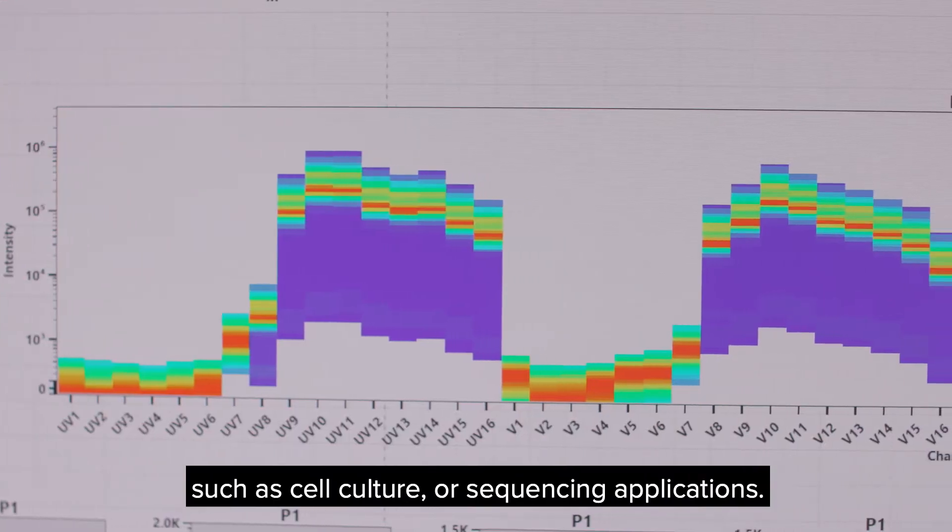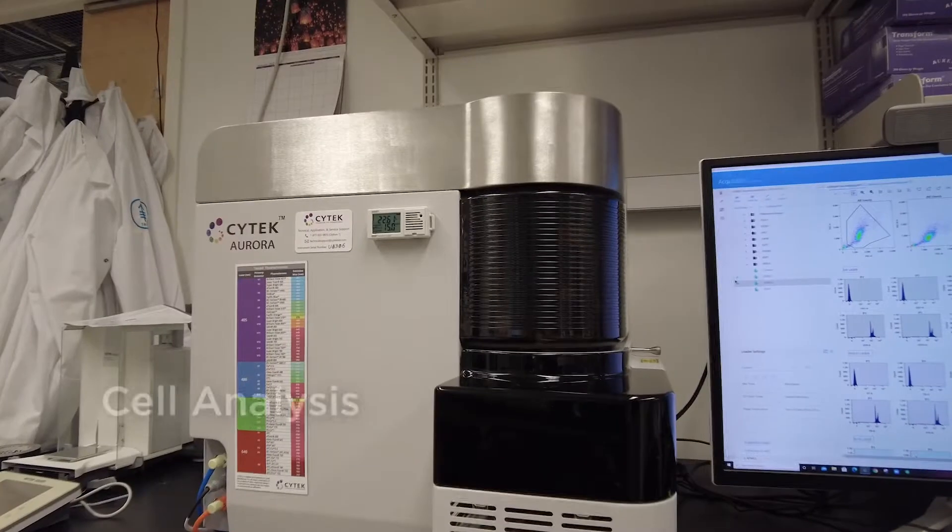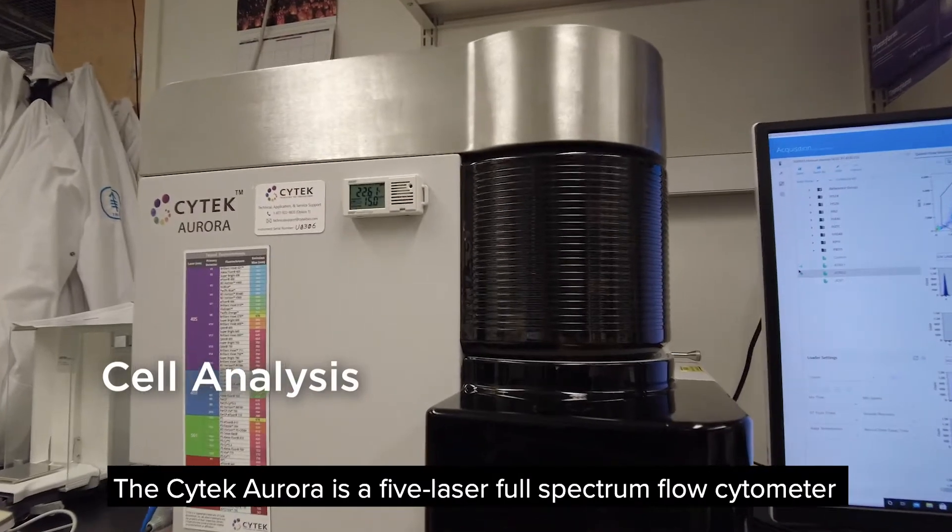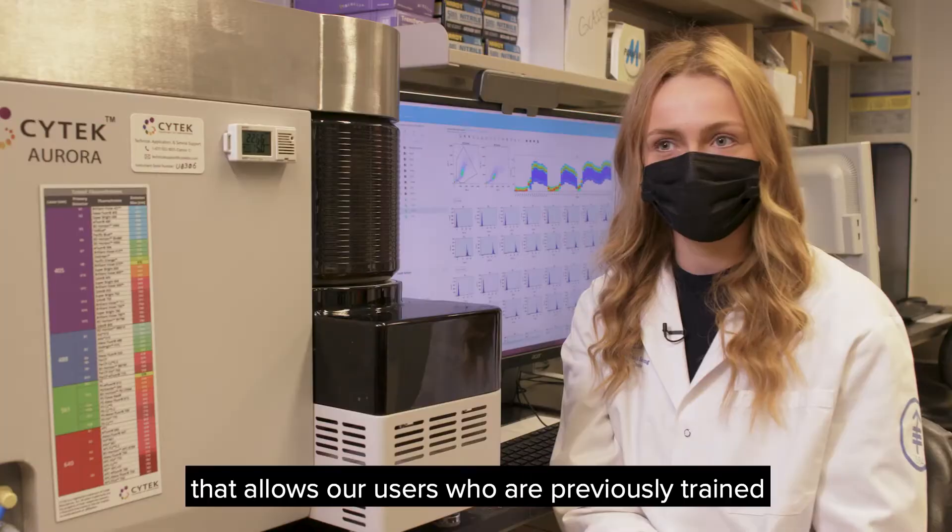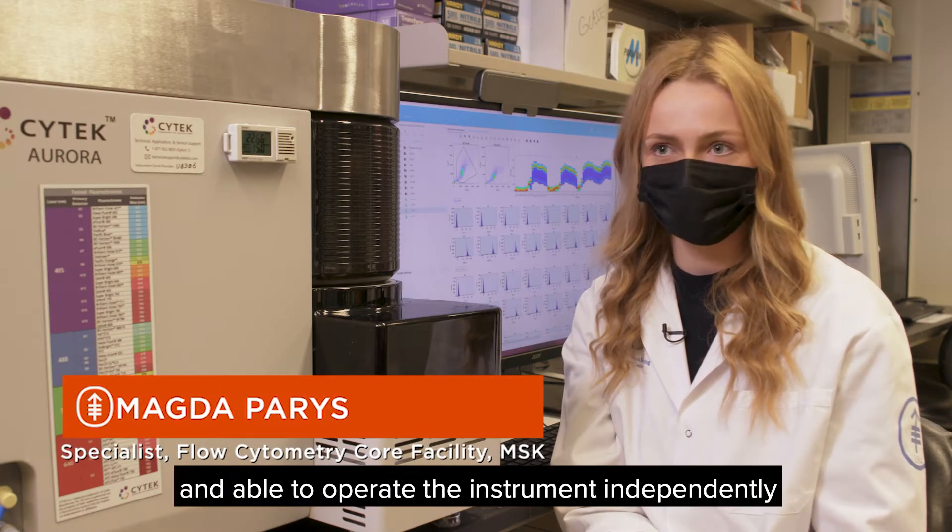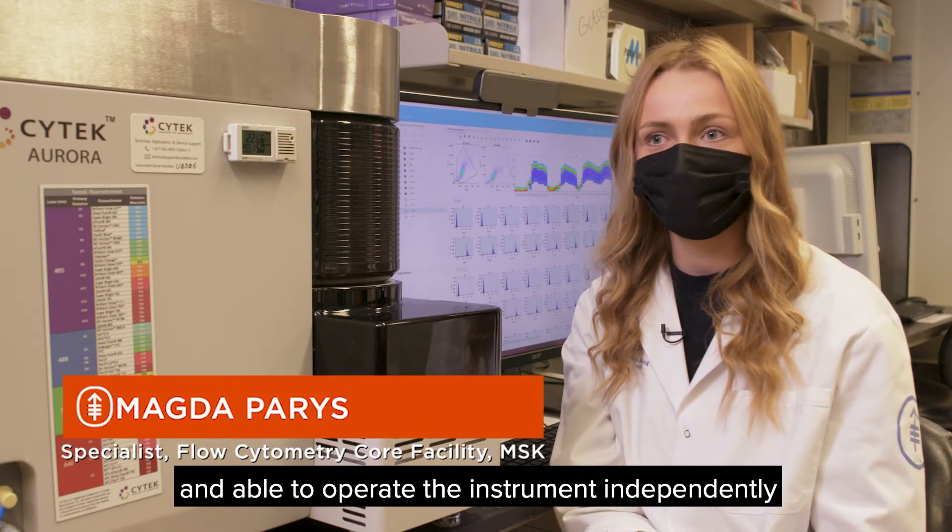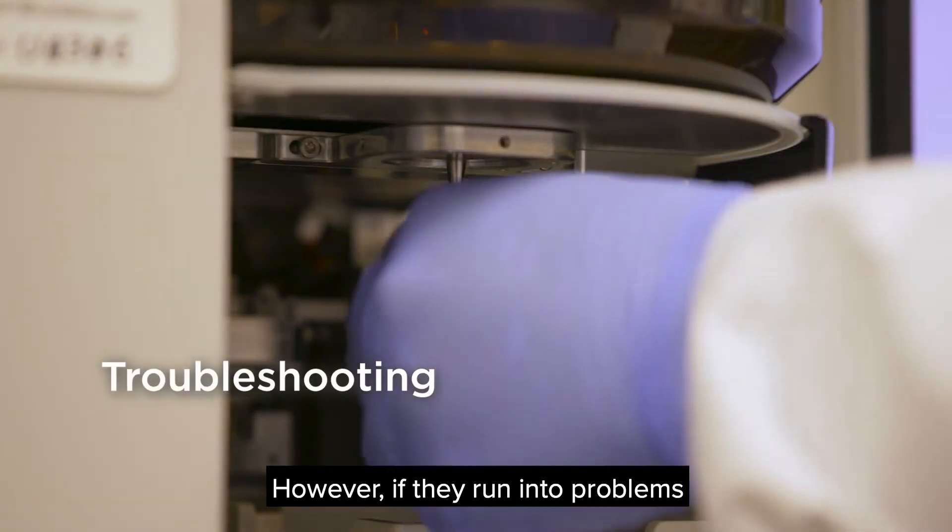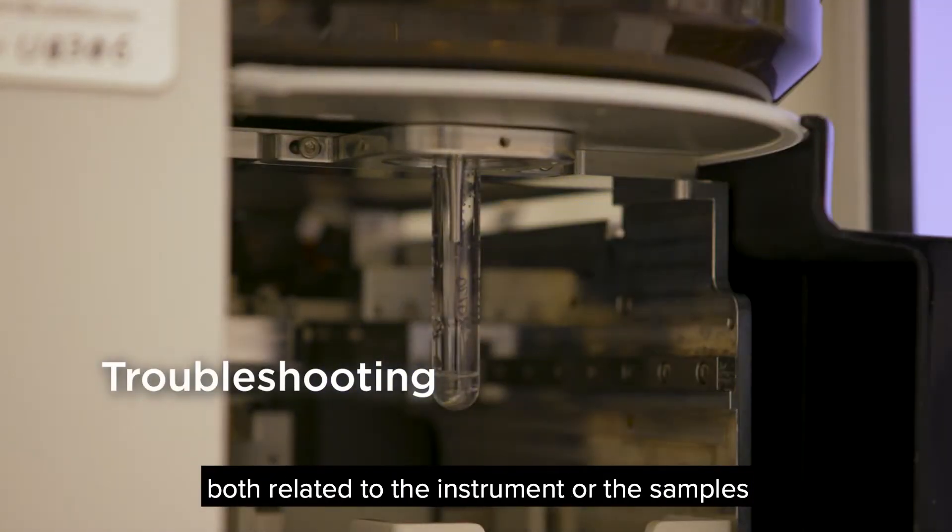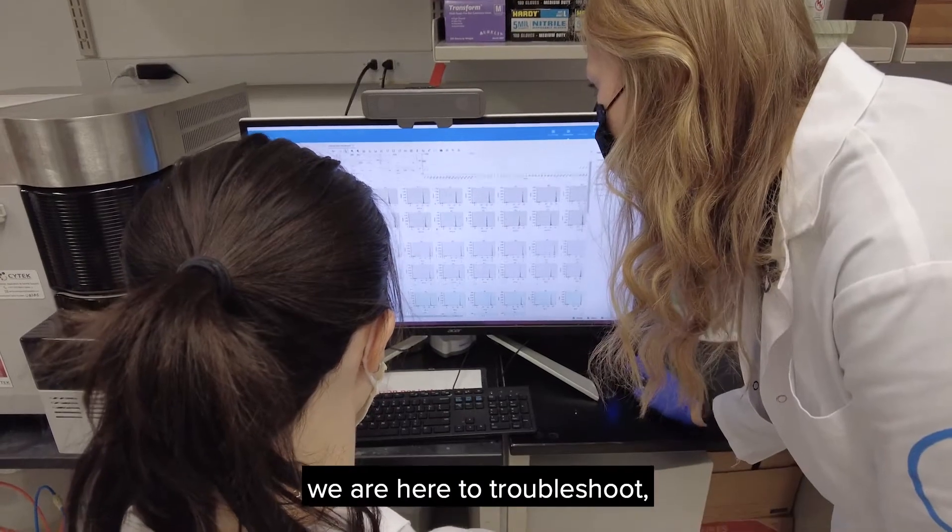The SciTech Aurora is a five-laser full-spectrum flow cytometer that allows our users who are previously trained and able to operate the instrument independently to acquire flow cytometry data. However, if they run into problems both related to the instrument or the samples, we are here to troubleshoot but also to provide our suggestions and advice for further improvements.